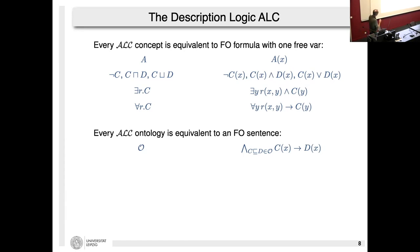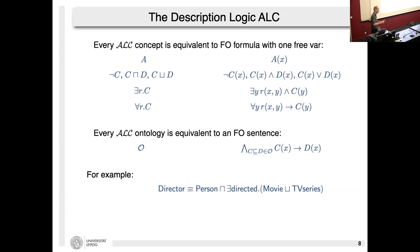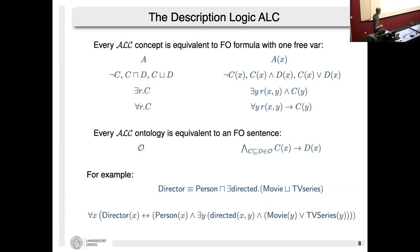The ontology translates in the obvious way as implications between concepts. For example, the statement 'Director ≡ Person ⊓ ∃directed.(Movie ⊔ TVSeries)' translates to: for all x, x is a Director if and only if x is a Person and there exists a y such that directed(x,y) and y is a Movie or a TVSeries.